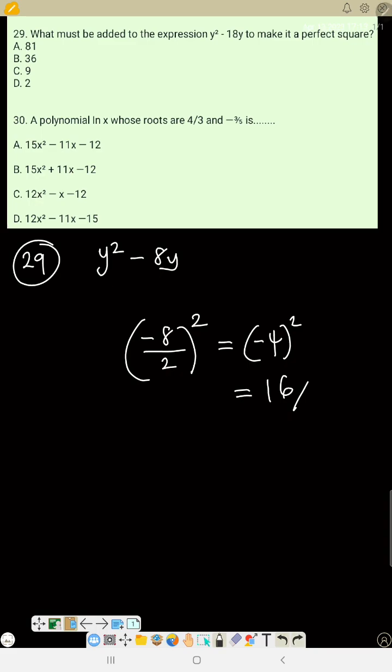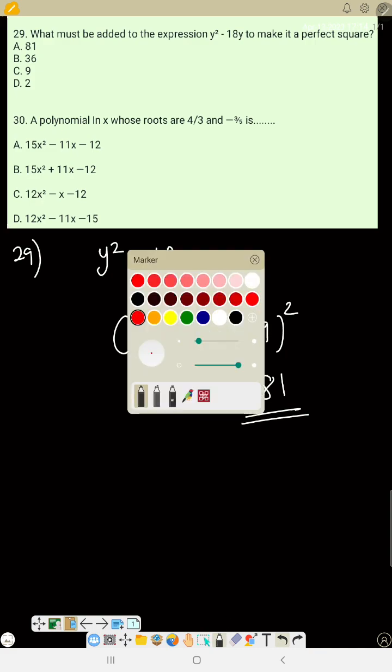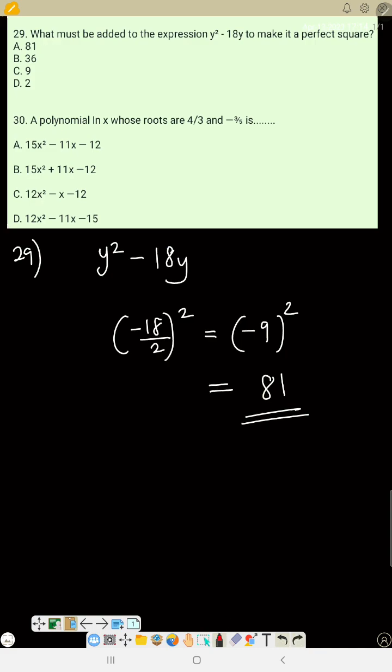Wait, the answer is not there. Let me recalculate. For y squared minus 18y, pick the middle number, that is minus 18, divide it by 2, and square the result. That will be minus 9 squared. So minus 9 squared is 81. Minus times minus is plus, so the correct answer is 81.